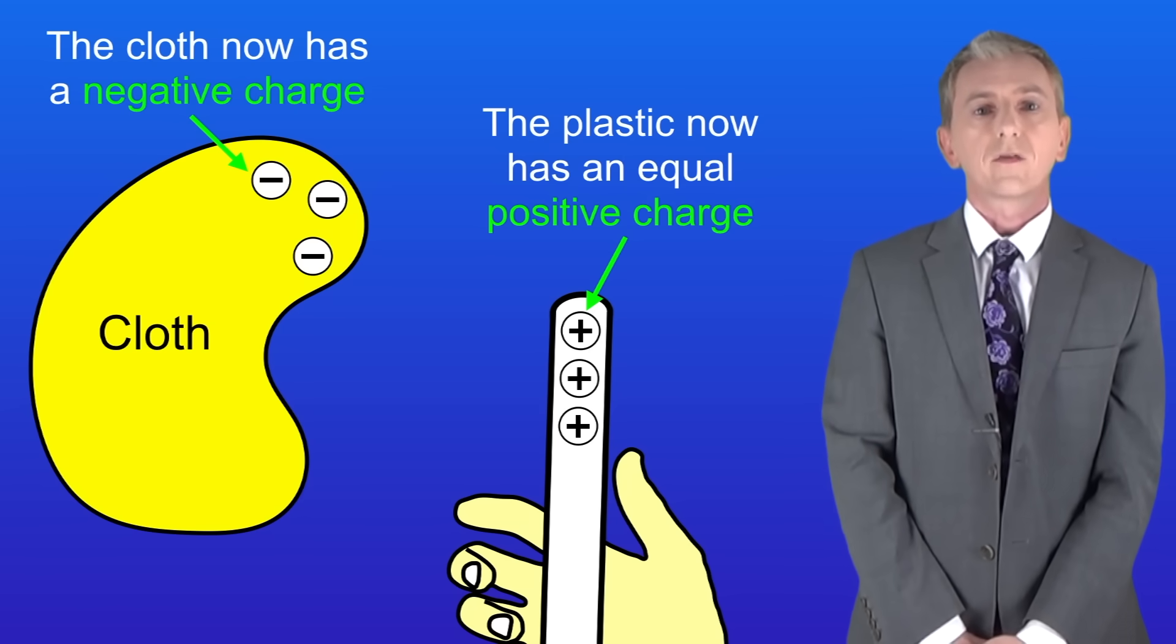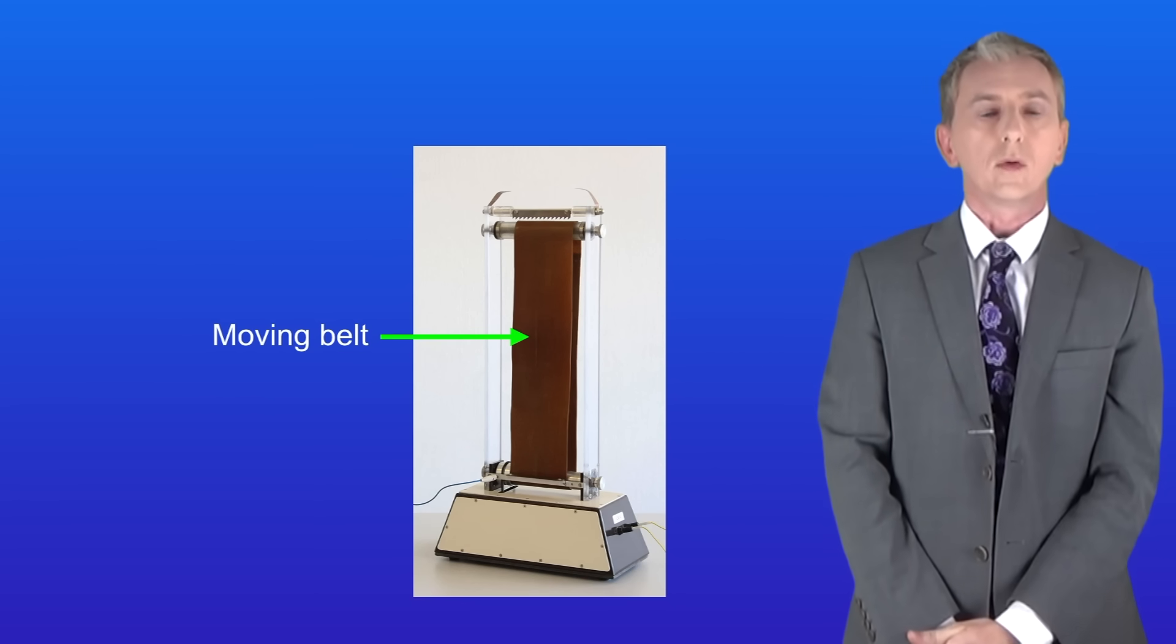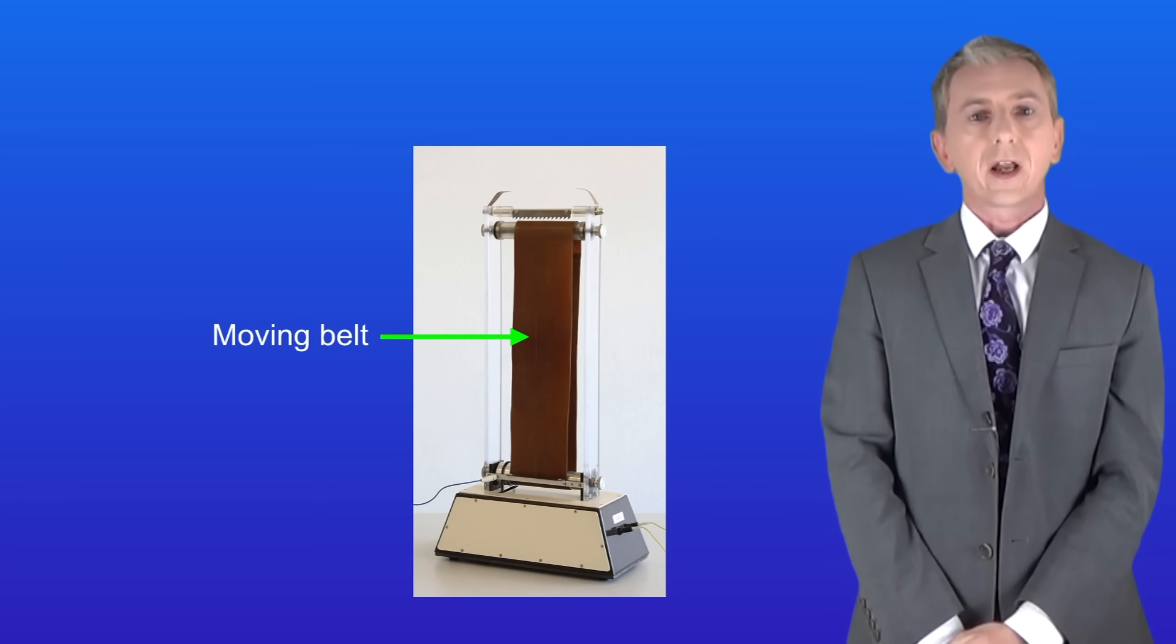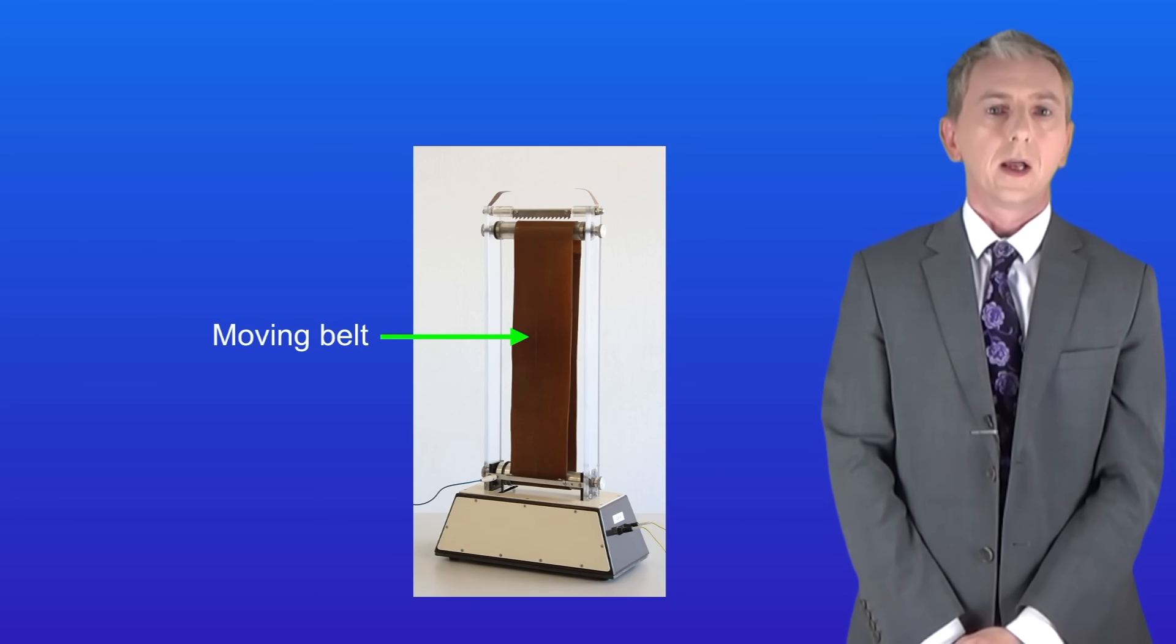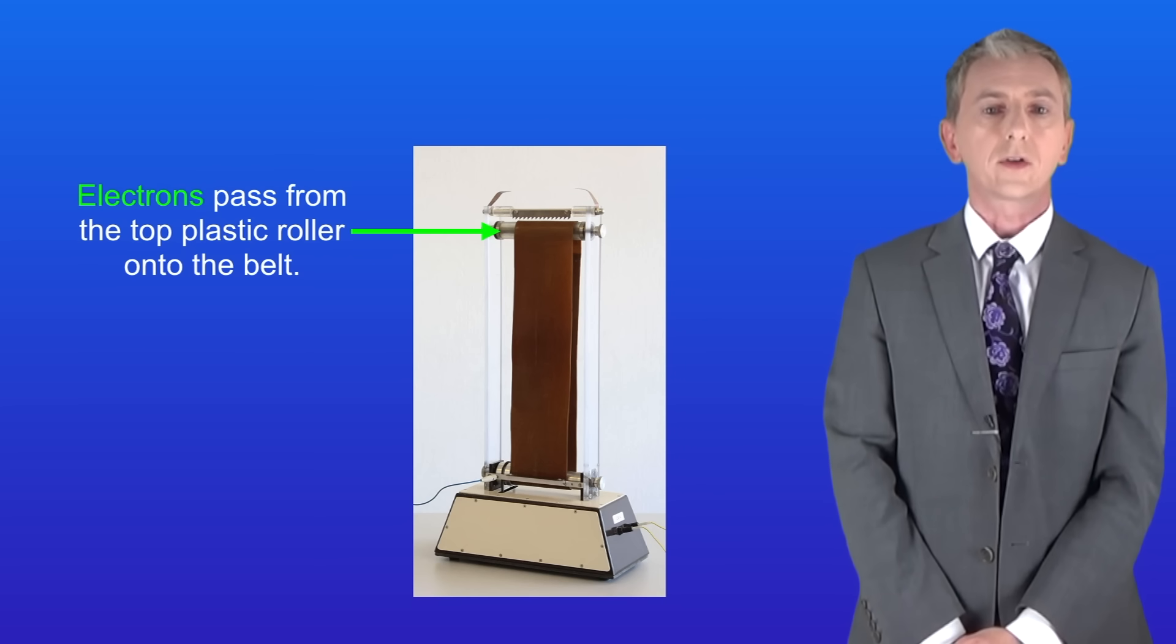If we go back to the Van de Graaff generator we can see what's happening. I'm showing you here the generator with the top dome removed. In the generator we've got a moving belt. As the belt moves, electrons pass from the top plastic roller onto the belt.